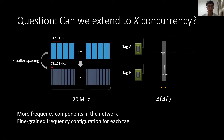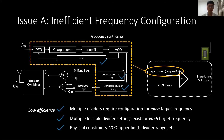If we follow 802.11ax protocol, two things would happen. One is that we will get more frequency components in the network, because in a single 20 MHz band the carrier spacing will be smaller. Another thing is that for each tag, fine-grained frequency configuration is needed. However, if we continue to use the existing design, it will be extremely inefficient to realize such a network, because existing work generates a square wave directly from the analog domain using a frequency synthesizer.